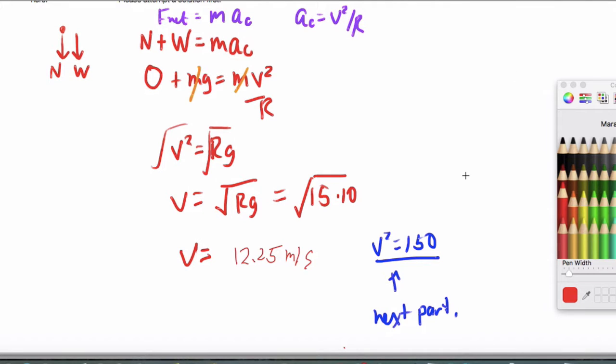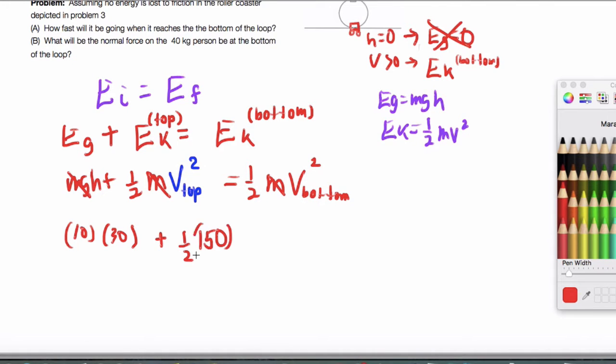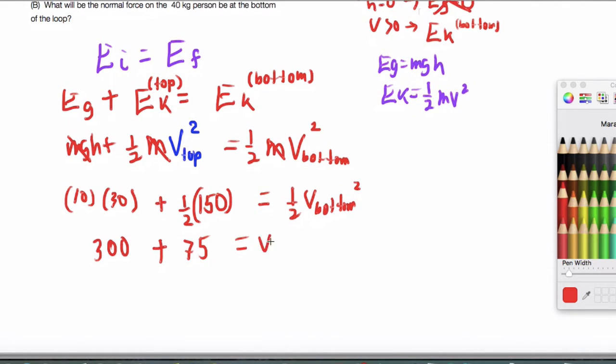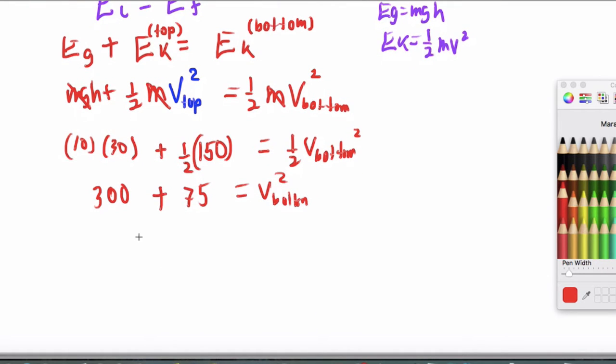And I need v at the top squared, which is this 150 that I had before. So I have one-half times 150 equals one-half times v bottom squared. And so I'm going to have 300 plus 75 equals v bottom squared divided by 2.